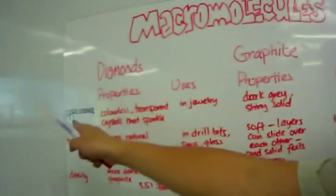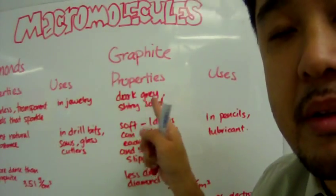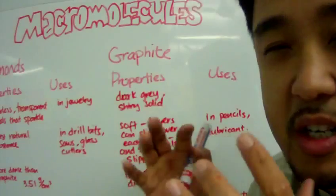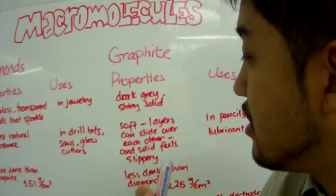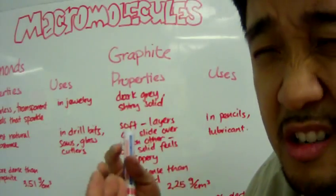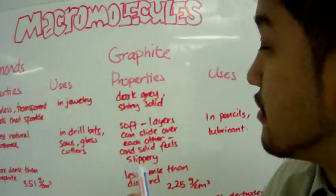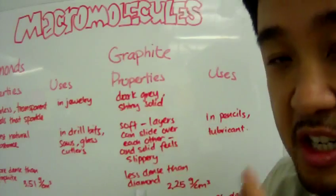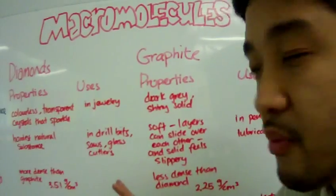For appearance, graphite has a very dark gray look. Dull in color, but kind of shiny. So, it's dark gray, shiny, solid. How hard is graphite?